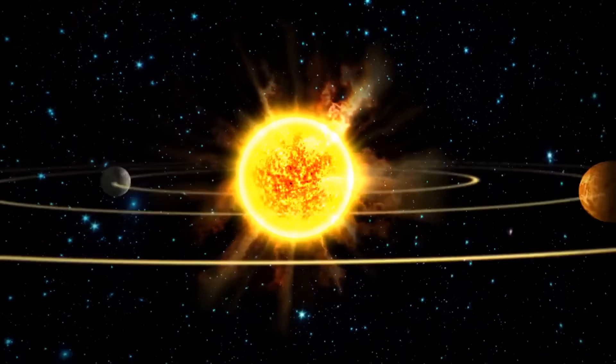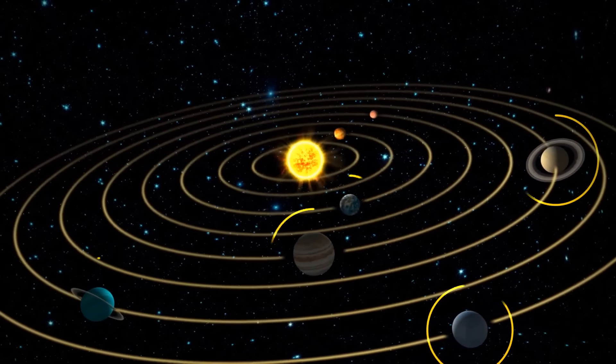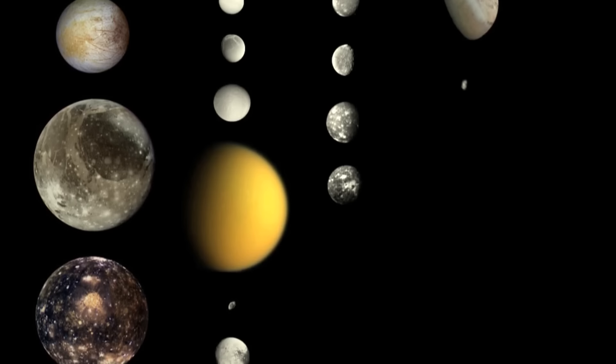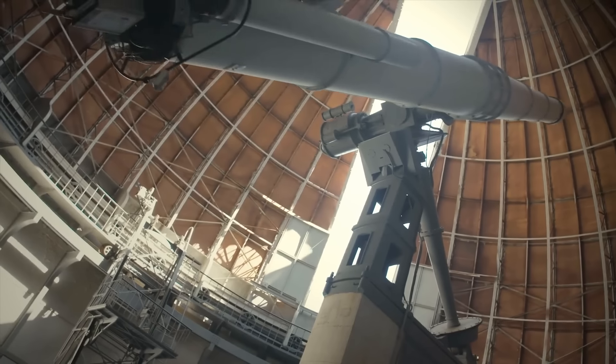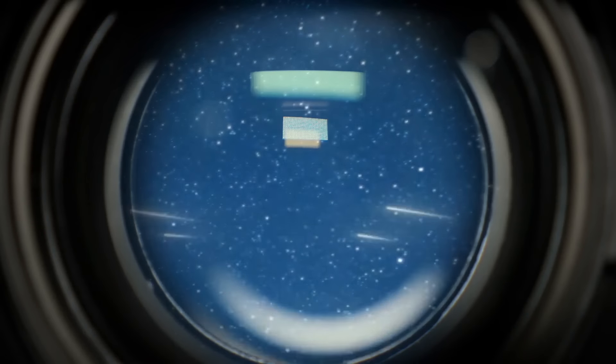While we may think of ourselves as advanced after catching a glimpse of the eight planets of our solar system and their 200 moons, we really have little idea of what's out there.